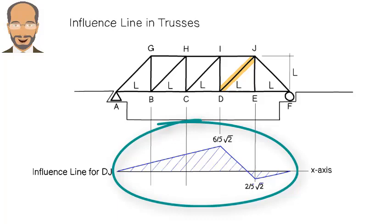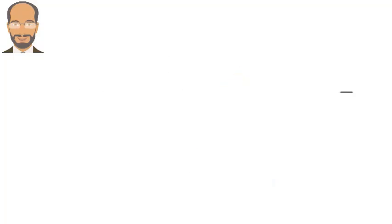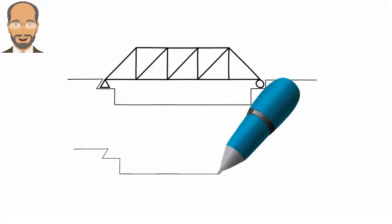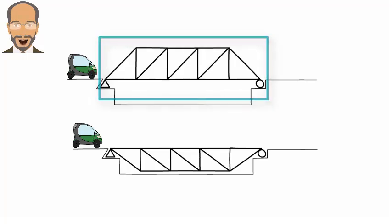So, now we know how to interpret an influence line, but how do we draw one? Since there is a moving load involved, first we need to determine the path of travel for the load. For example, for this bridge, the path of travel is along the bottom chord.